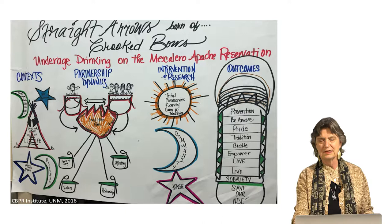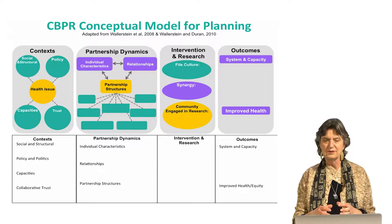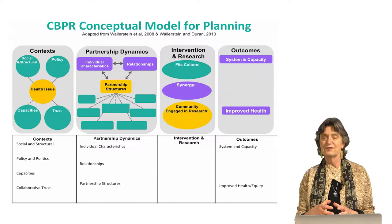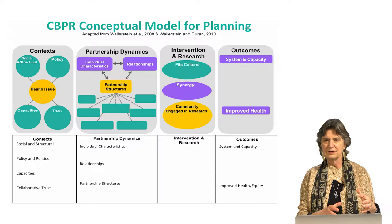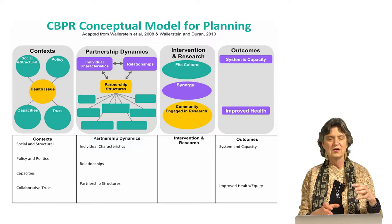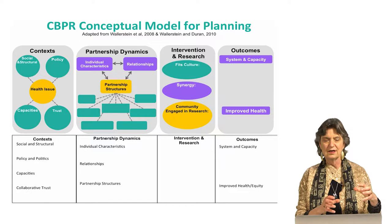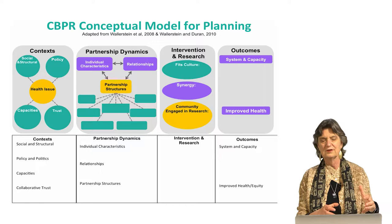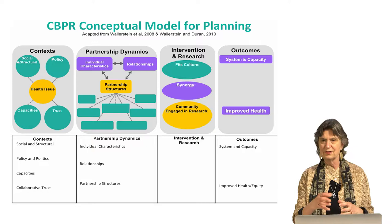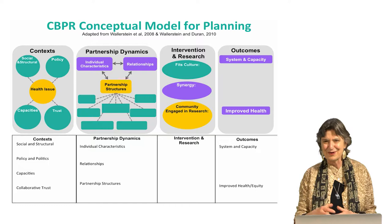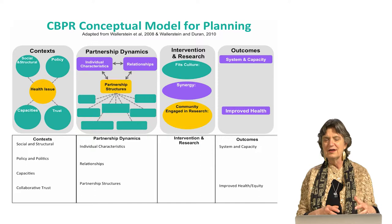I wanted to ask you as IRL teams to begin thinking about what model you would create for yourself. If you're just starting, the best place to start is context, because you bring that knowledge of your context with you. What is the social and structural level, the SES level? Who is in that community? What are the potential institutions — some may be barriers, some facilitators? What policies may be barriers or facilitators? What is the health issue you've identified? What is the level of trust you have now and want to aspire to? What are your capacities and challenges?